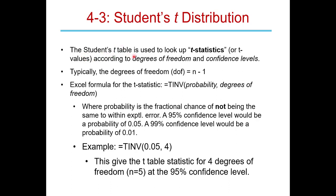We use a table called a Student's T table to look up values called t-statistics or t-values, needed for confidence intervals and significance testing. Two things we need to look up those values: the number of degrees of freedom — typically the number of trials n minus one — and a confidence level, such as 95% or 99%.